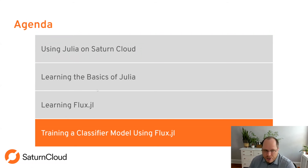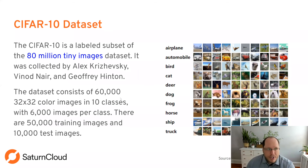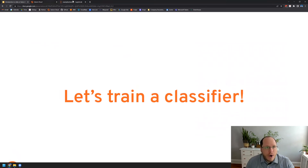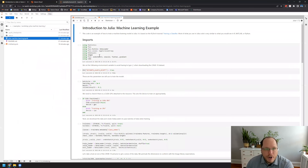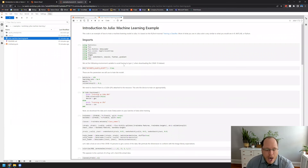Let's jump right in and train a classifier using Flux.jl. We're using the CIFAR-10 dataset, which consists of 60,000 32×32 color images across 10 classes from airplane to truck, with 50,000 training images and 10,000 test images. I'm going to click on the Julia machine learning notebook, hit run, because it does take a couple minutes to train. This model is training on a CPU, but you could very easily change the resource to a GPU.